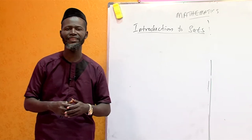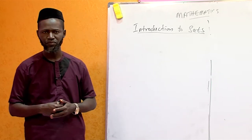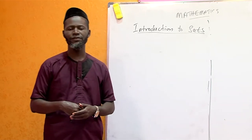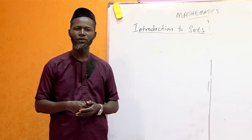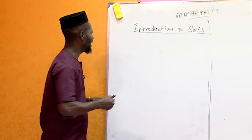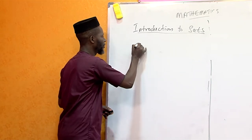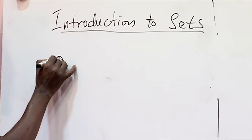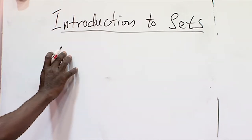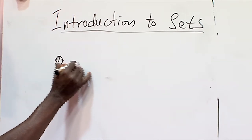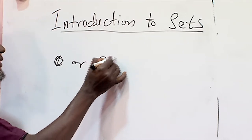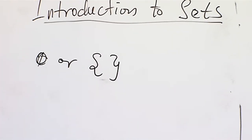We have different types of sets. We have a finite set. We have an empty set. For the empty set, this is the symbol — it is either you use this symbol or you use this one to represent an empty set.